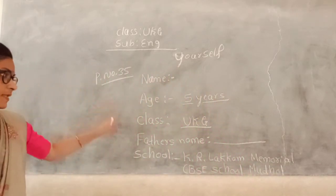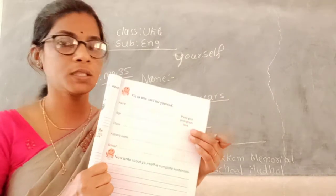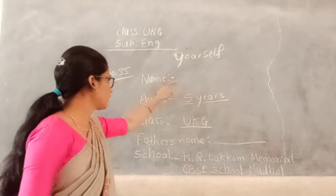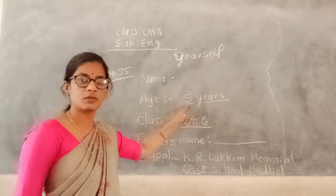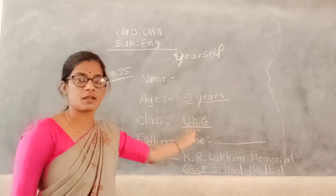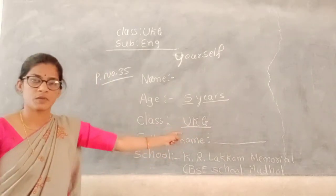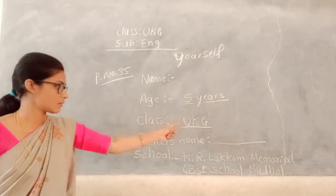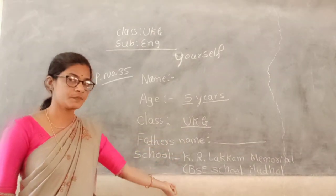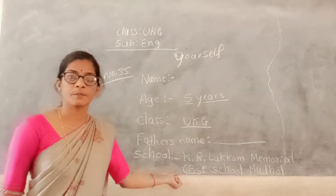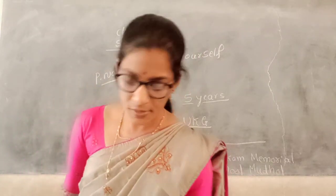You complete this card, children. They will give you the card here — you complete it. Write your name, write your father's name, write your class — UKG class, I am studying in UKG class — and school name.